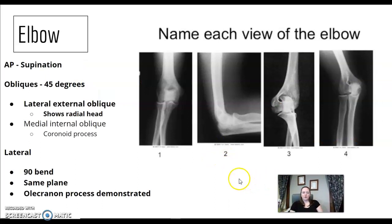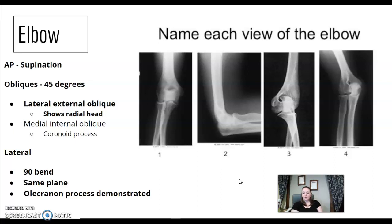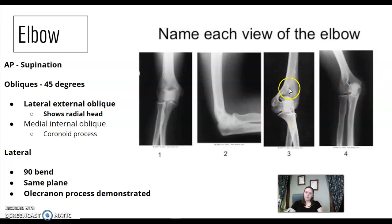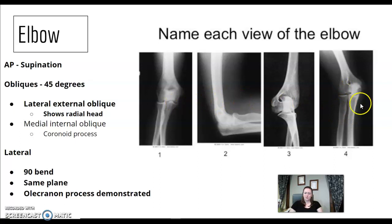Elbow. Some key terms about elbow: the AP is in supination — remember that hands-out position, like you're holding a cup of soup. How are your humeral epicondyles positioned — are they parallel to the imaging plate or perpendicular? Remember the oblique elbows. We use an external oblique as our protocol, but you need to also remember the internal oblique. The external oblique shows the radial head free of superimposition. The internal or medial oblique shows the coronoid process. On the AP, the radial head and tuberosity are superimposed, unlike the external oblique where they're open.